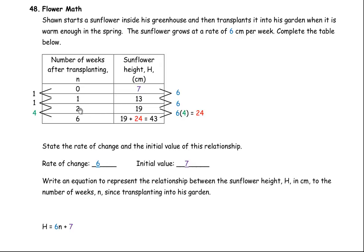Now we've skipped a few weeks here. You don't see the 3, 4, or 5. So there's a difference of 4 weeks from here to here. From 2 to 6 is a difference of 4 weeks. So from 19 to this number here, it's gone up 6 four times. The difference here would be 6 times 4, or 24. So we're going to add 24 to the 19, so this value would be 43.